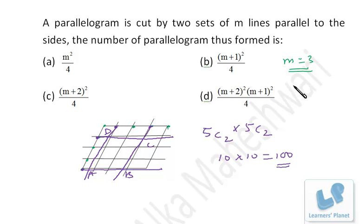So this is obviously not the correct choice. Here, 3 + 2, 5 squared, that is 25 by 4, this is not correct. Similarly, 3 + 1, 4 squared by 4, that's also not correct.